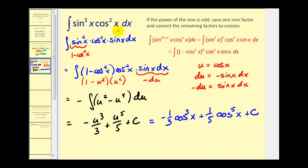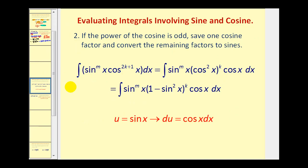This is the technique when the power of sine is odd. We'll have a similar technique when cosine is odd — we save one factor of cosine and then convert the remaining factors to sines. Looking at the setup: if the power on cosine is odd, we save one factor of cosine, leaving an even power on cosine, and then take those even powers of cosine and convert them to (1 − sin²x).